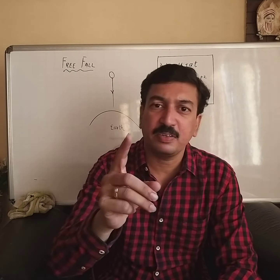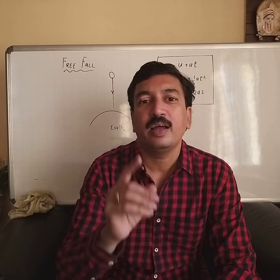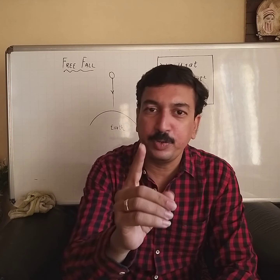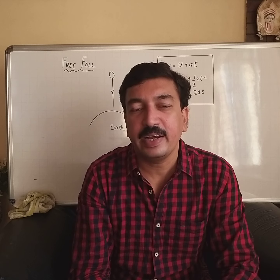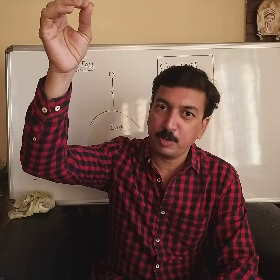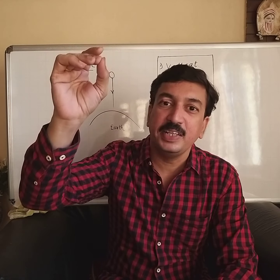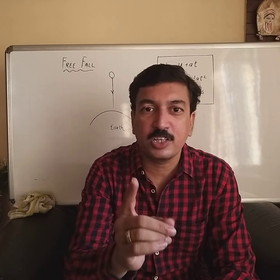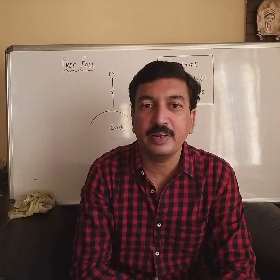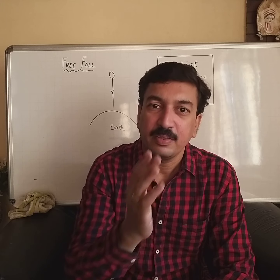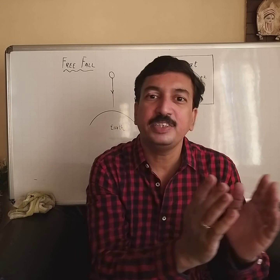These 3 equations of motion will be helpful for finding the time required for the object to move from that height to the ground. As the object is coming down, its velocity will increase, and that's why acceleration due to gravity will be positive — g will be positive. And secondly, when the object is released from the height, its initial velocity will always be taken as 0. So u = 0. That's why the 3 equations of motion will slightly change.